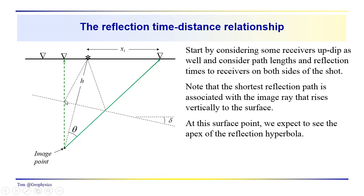The length of this reflection path is equal to the length of the line drawn from the image point up to this receiver. For any reflection travel time, we have the length of the ray path drawn from the image point to the receiver being equal to the actual reflection path length. The use of the image point also helps us locate the reflection point.